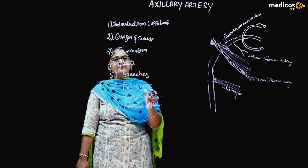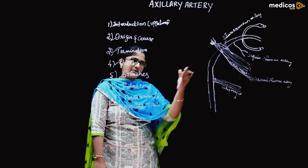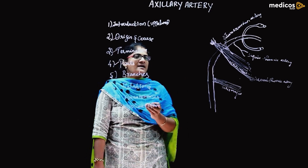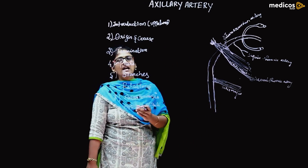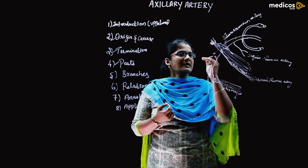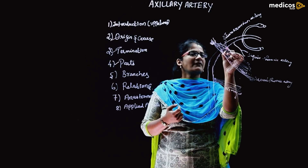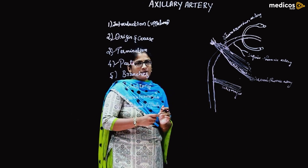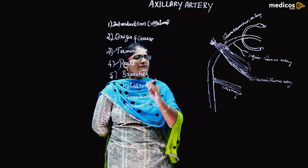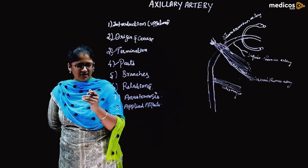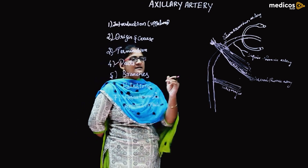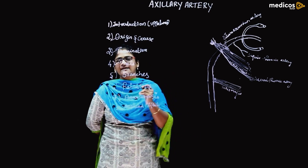From the first part, the superior thoracic artery emerges and supplies the upper part of the pectoral region and a little part of the mammary gland. From the second part, it gives two branches: the thoracoacromial artery, which divides into four branches — deltoid, clavicular, pectoral, and acromial — supplying their respective areas. The second branch from the second part is the lateral thoracic artery, which runs at the lower border of the pectoralis minor muscle and is the important artery supplying the mammary gland.